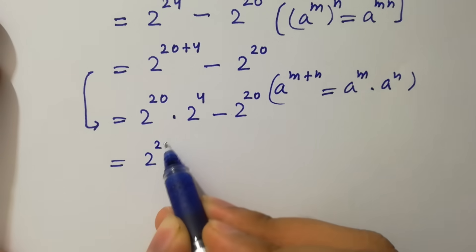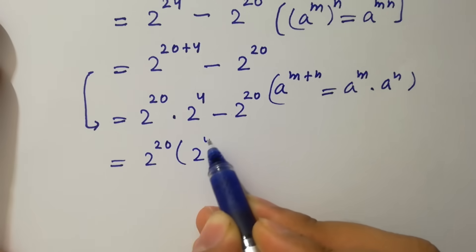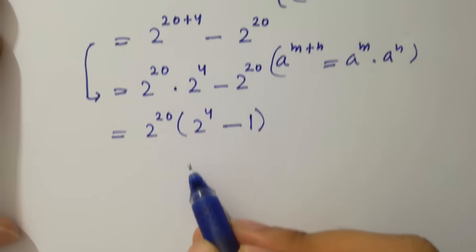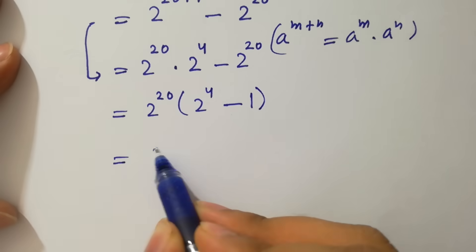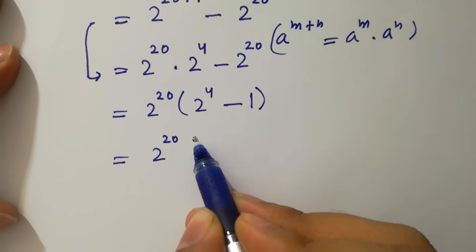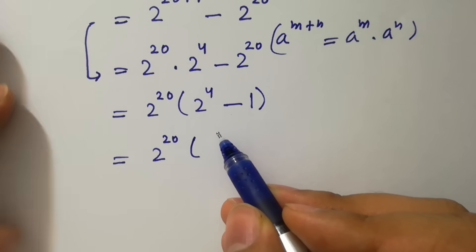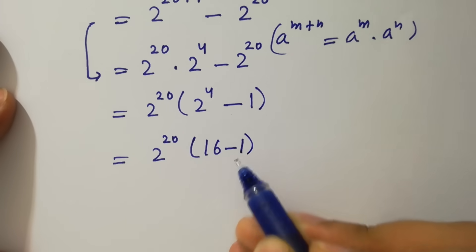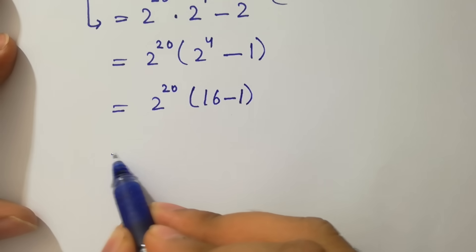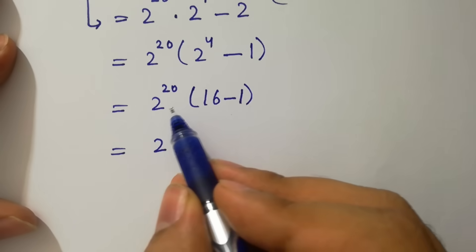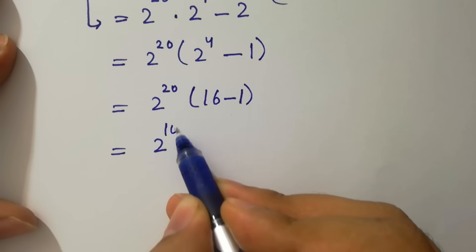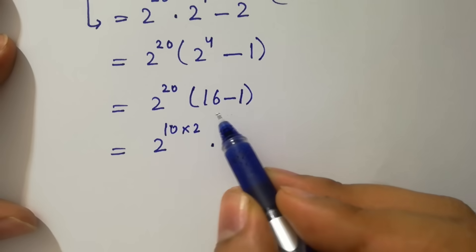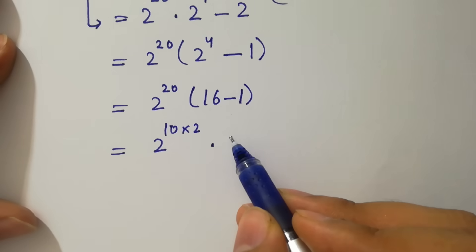2 to the power 20 can be taken as common, giving us 2 to the power 20 times (2 to the power 4 minus 1). Now 2 to the power 4 is 16, so 16 minus 1 is 15. We have 2 to the power 20 times 15.